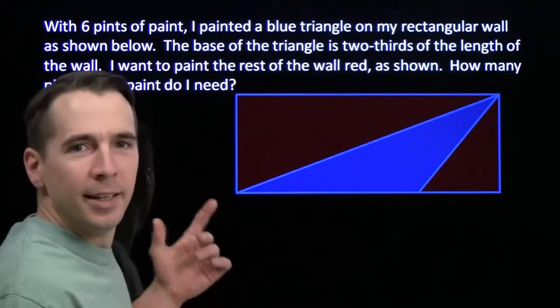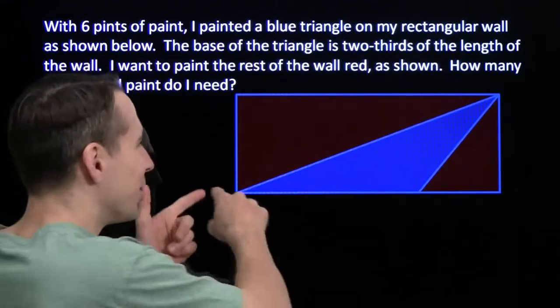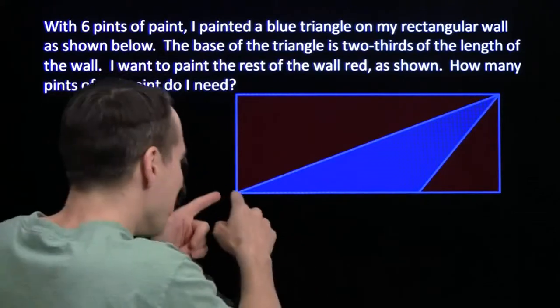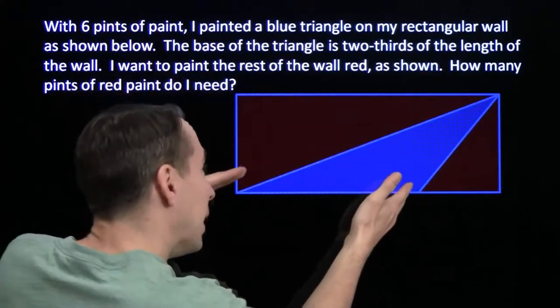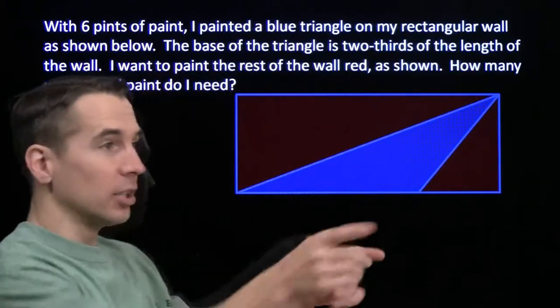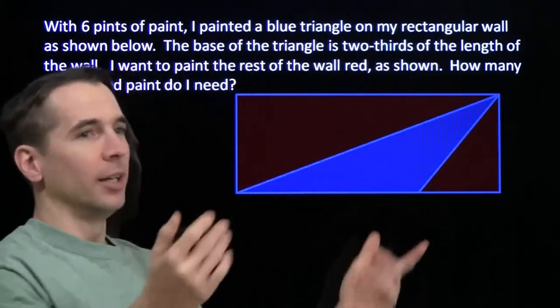I like that red. I'm painting my studio again. I started off with the triangle here, and the base of the blue triangle, it's two-thirds the length of the wall, and I painted this whole blue triangle already. It's on the wall over there. You can't see it, but it's beautiful.